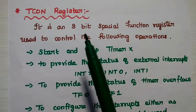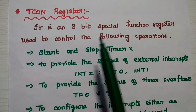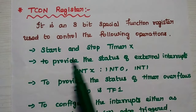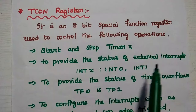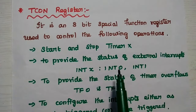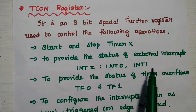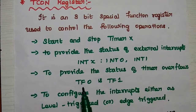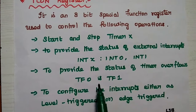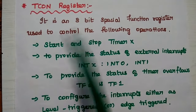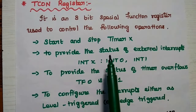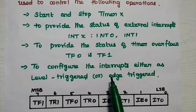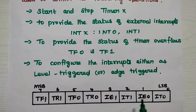The next register is the TCON register, the timer control register. It is an 8-bit special function register used to start and stop the timer, to provide the status of external interrupts (INT0 and INT1), and to provide the status of timer overflow interrupts. In AT51 there are two timer overflow interrupts: TF0 and TF1. The TCON register is widely used to control interrupts in AT51 and to configure interrupts as either level-triggered or edge-triggered.